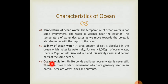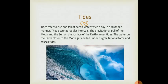Another is ocean circulation. Unlike ponds, lakes, ocean water is never still. There are three different kinds of movement which are generally seen in oceans such as waves, tides and currents. Now we will study one by one about them. What is tides? Tides refer to rise and fall of ocean water twice a day in a rhythmic manner. They occur at a regular interval. And why does this occur? Due to the gravitational pull of the moon and the sun on the surface of the earth. The water on the earth closer to the moon gets pulled under its gravitational force and causes tides.